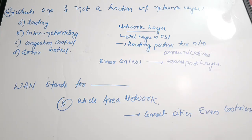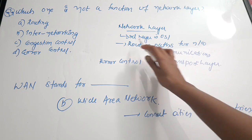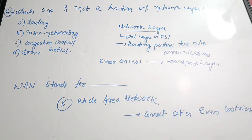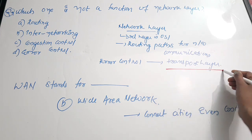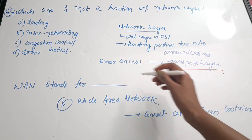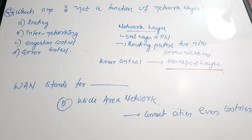Question 9: which one is NOT a function of the network layer? Options: A) routing, B) inter-networking, C) congestion control, D) error control. The network layer is the third layer in the OSI model. Its main functions include routing, inter-networking, and congestion control. Error control is done by the data link layer and mainly the transport layer. The correct answer is option D, error control.